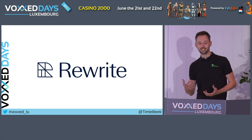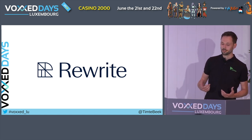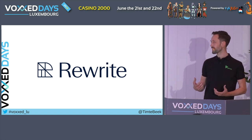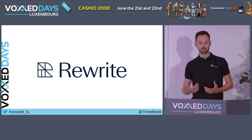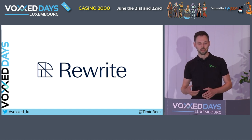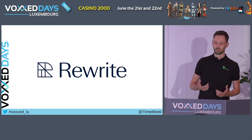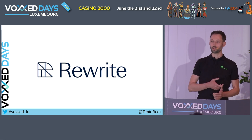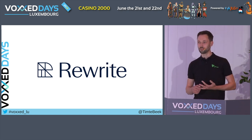Imagine my excitement last year when I discovered Open Rewrite. Open Rewrite promises to make light of all such migrations. With a simple command, you can now upgrade between versions of Java and Spring. And you can even migrate between frameworks, such as from JUnit to AssertJ, and from Java EE to Spring.